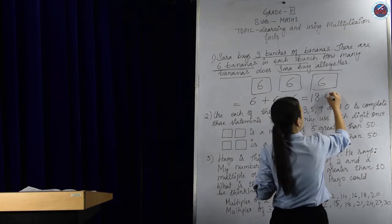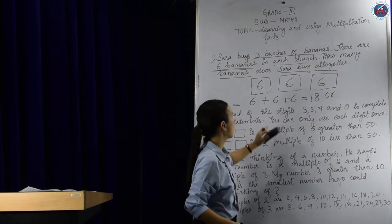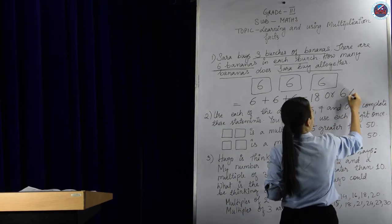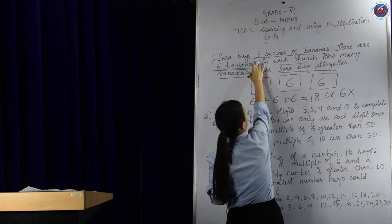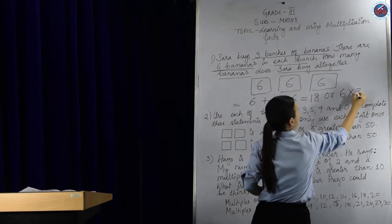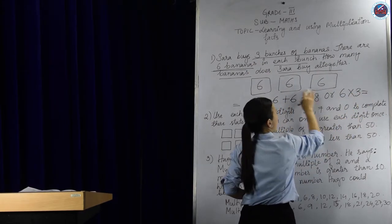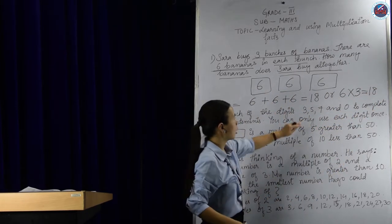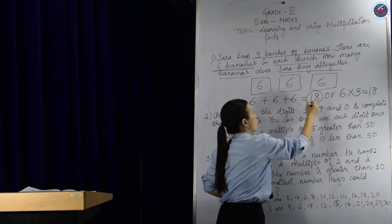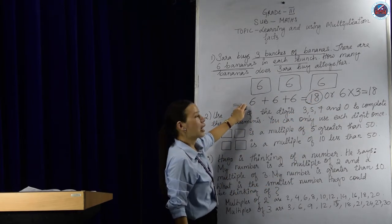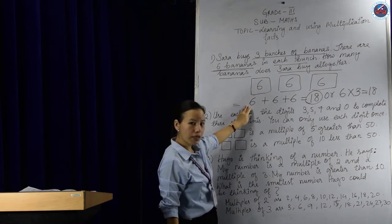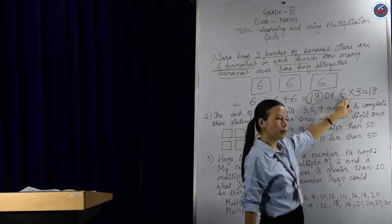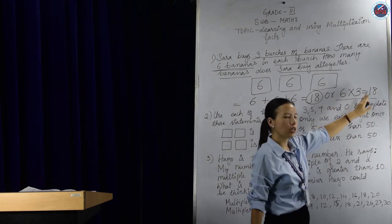You can find the answer using the repeated addition method, or you can find it by multiplying. We have six bananas in each bunch and three bunches, so six times three equals 18. So altogether she buys 18 bananas. You can use either the repeated addition method or multiplication — simply 6 into 3 equals 18.